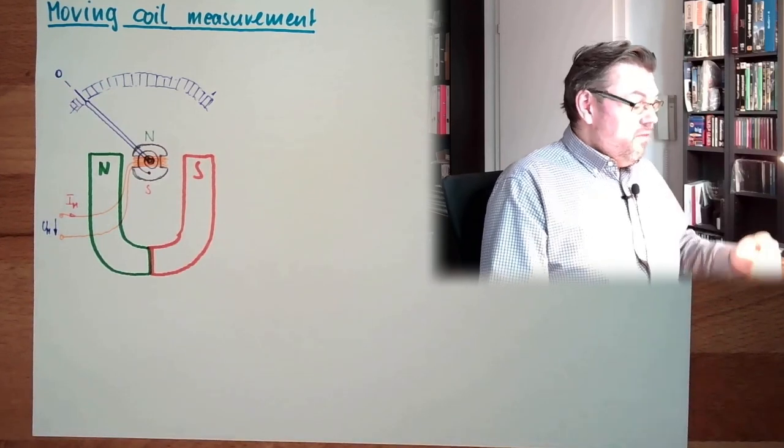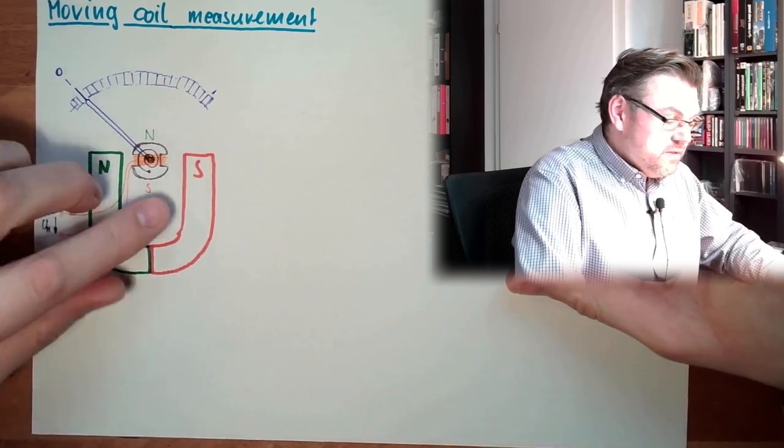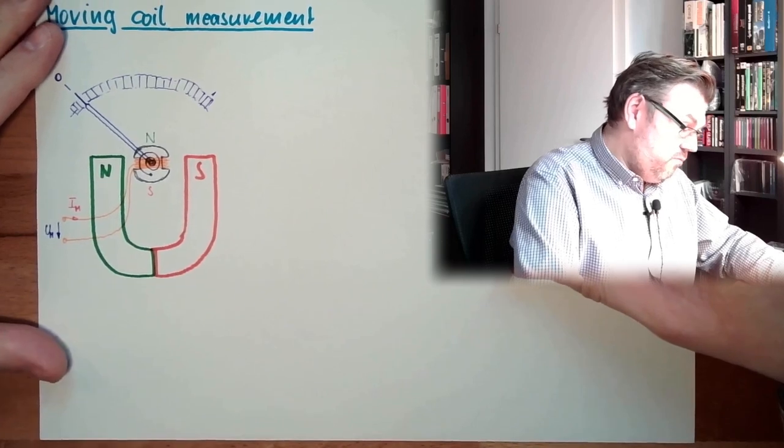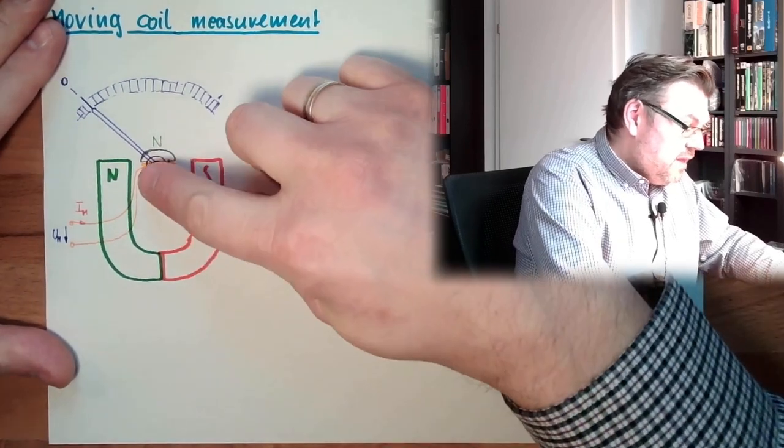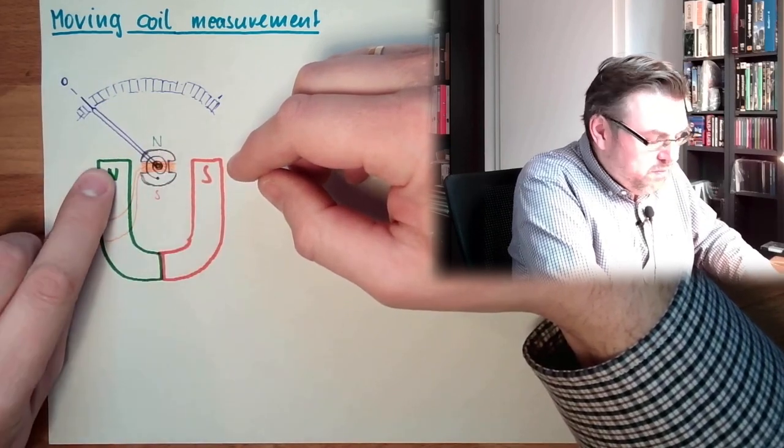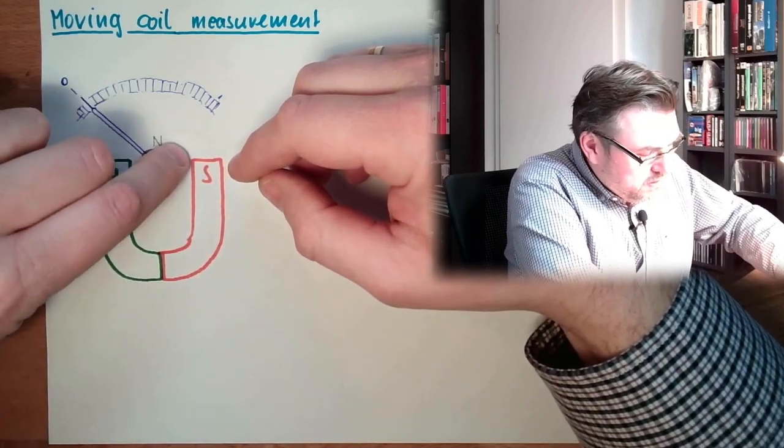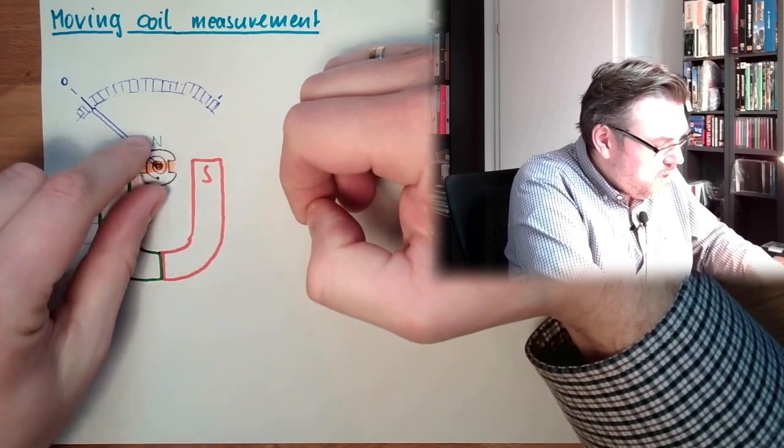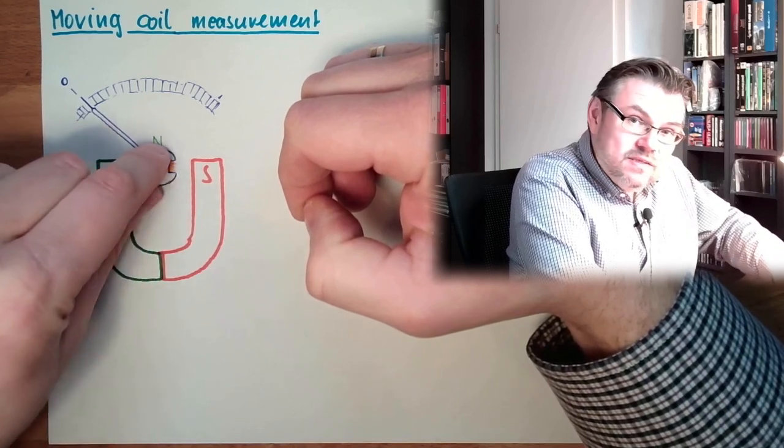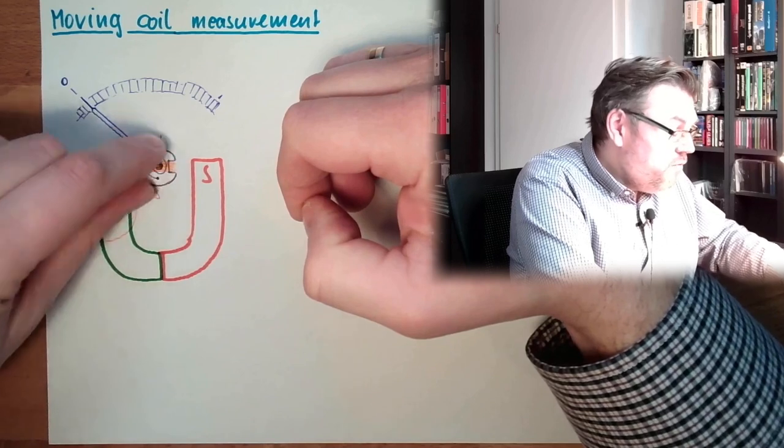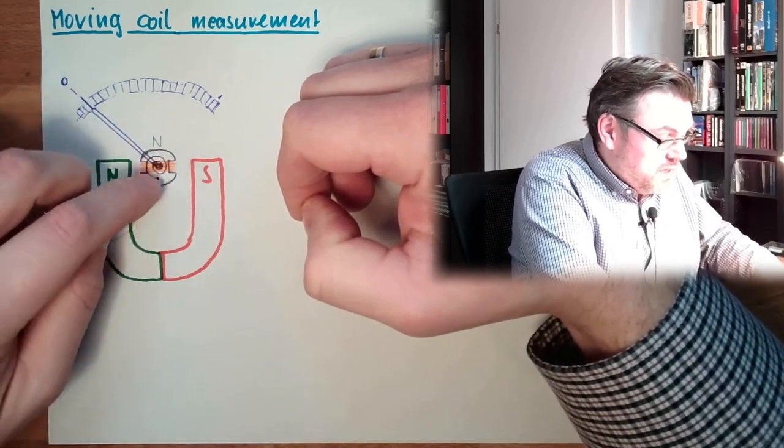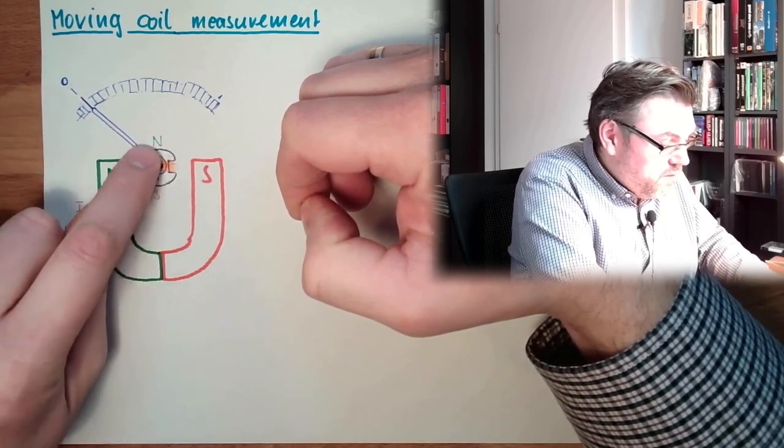Since we know that north and south are attracted to each other, and north and north are not attracted to each other, we will get a torque in this direction. This north pole wants to go to this south pole and away from this north pole. This south pole wants to go here and away from here. So we are now moving in this direction.